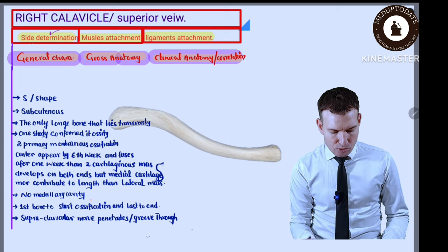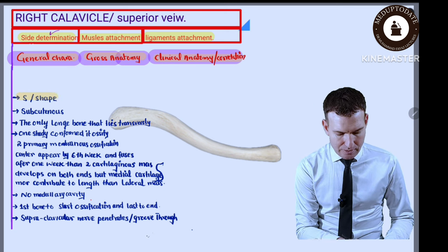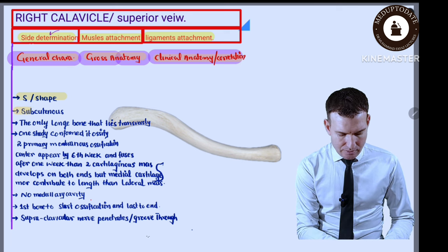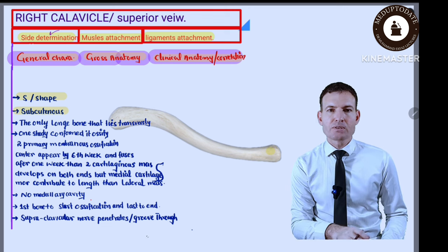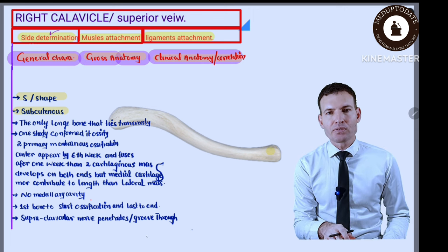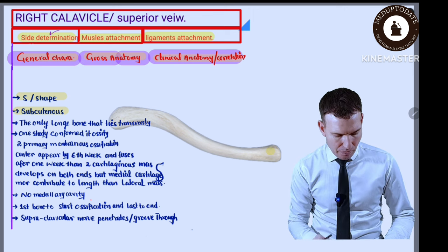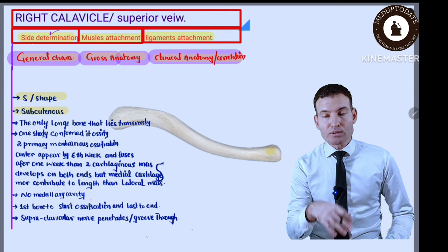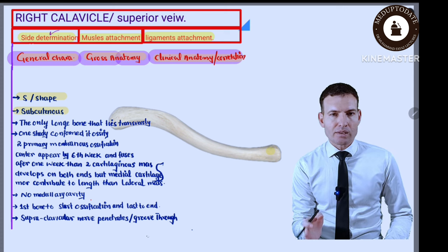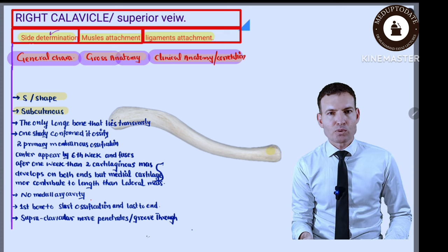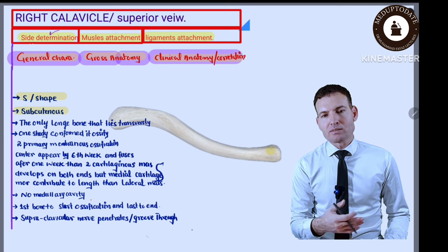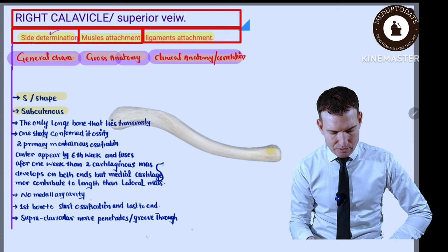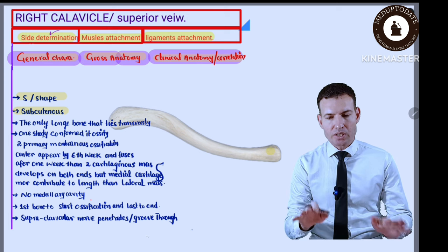Starting with general characteristics: when you look at the posterior aspect, this bone is S-shaped. It is subcutaneous throughout — you can palpate it during physical examination because the superior surface is completely subcutaneous with only skin directly over it. It is the only long bone that lies in a transverse position; all other long bones of the upper and lower limb lie in a vertical position. This makes it risky and the most commonly fractured bone.